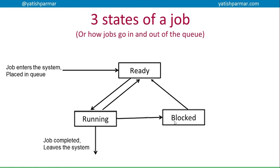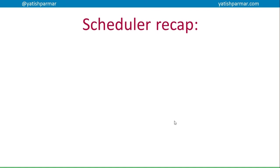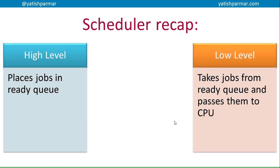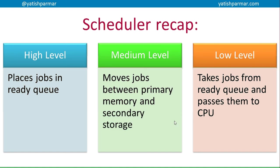The high level scheduler puts jobs into the ready queue only if there is sufficient room in primary storage, if the data needed is available, and if the required peripherals are available. The low level scheduler takes jobs from the ready queue and passes them to the CPU. In between those two, the medium level scheduler moves jobs - when a job is ready and enters the ready queue, it can move data files from the hard disk into main memory, or move them back out when a job leaves the running state.